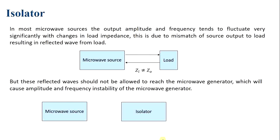To avoid this, an isolator is placed between the microwave source and the load. The signal from the microwave source passes through the isolator to the load, while any signal reflected due to impedance mismatch is absorbed by the isolator and does not reach the microwave source, because reflected waves reaching the generator would cause amplitude and frequency instability.